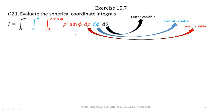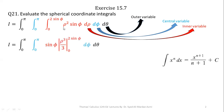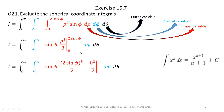We can take sine phi outside and apply the power rule on the term rho squared to integrate it. Sine phi remains as it is and the integration of rho squared is rho cubed over 3, evaluated for the limit 0 to 2 sine phi. In the next step, we apply the fundamental theorem of calculus — upper limit minus lower limit. Making the simplification: 2 cubed is 8, so we take 8 over 3 outside, and we are left with sine raised to power 4 phi d phi d theta. This completes the integration with respect to rho.